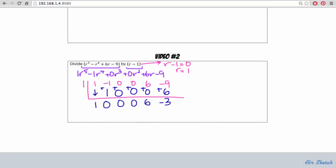Now the numbers we just got under our bar, those are going to be the coefficients for our quotient. So our quotient starts with r to the 4th plus 0 r to the 3rd plus 0 r squared plus 0 r plus 6 minus 3 over r minus 1.